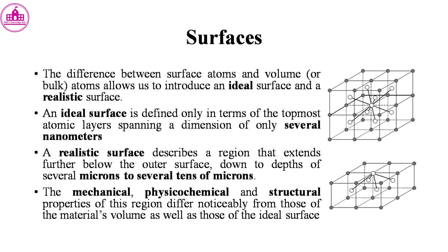A realistic surface describes a region that extends further below the outer surface, down to depths of several microns to several tens of microns. The mechanical, physico-chemical and structural properties of this region differ noticeably from those of the material's volume as well as those of the ideal surface.